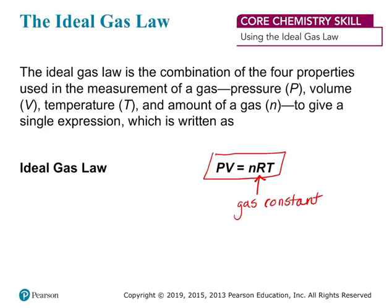We can obviously rearrange this equation to solve for an unknown variable. The gas constant R is equal to 0.0821, with units of liters times atmospheres over moles times kelvin. You'll notice we have units corresponding to each of the other variables: liters for volume, atmospheres for pressure, moles for amount, and kelvin for temperature.